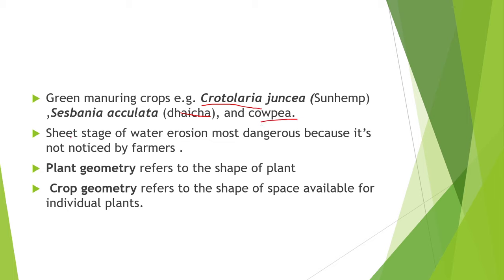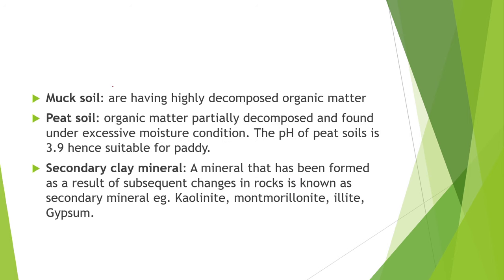Next point is, the sheet stage of water erosion is the most dangerous because it is not noticed by farmers. Next point is, plant geometry means the shape of the plant, but crop geometry means the shape of space available to the plant. Mug soil has highly decomposed organic matter. Peat soil has partially decomposed organic matter found under excessive moisture conditions. The pH of peat soil is 3.9 and hence it is suitable for paddy crop.